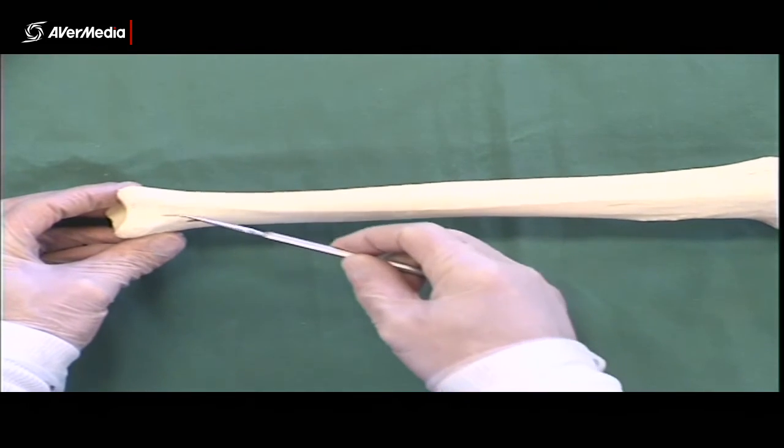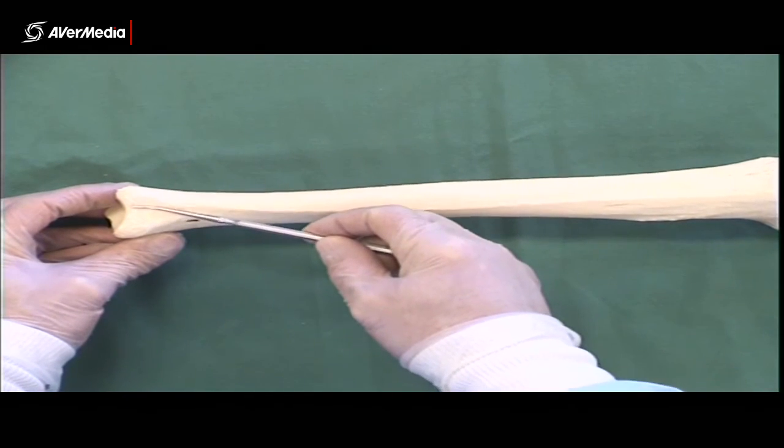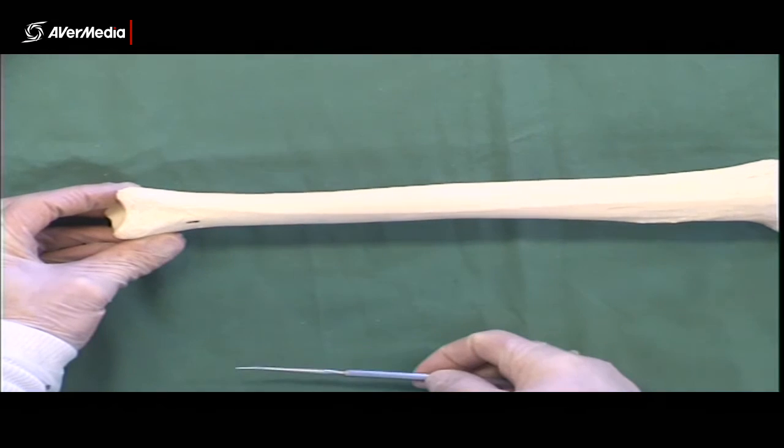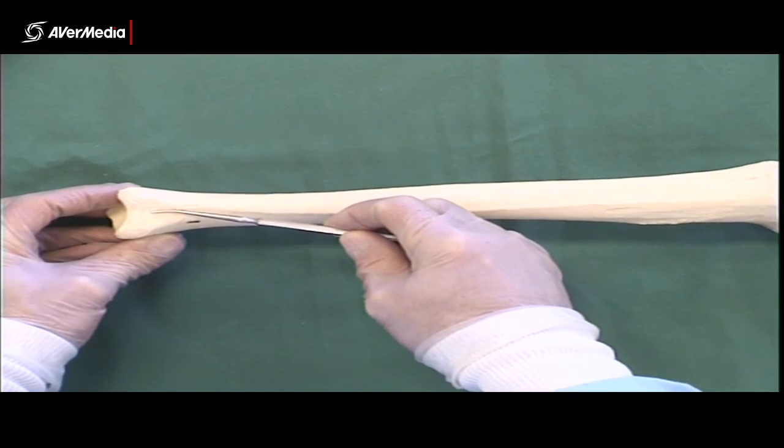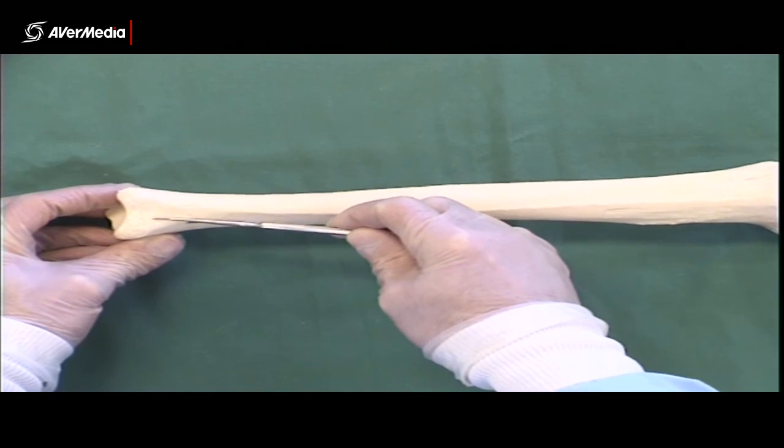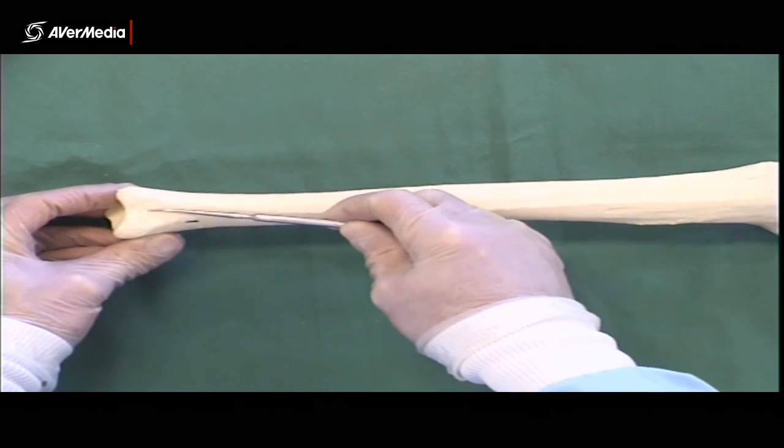And while we're here, down at the distal end, we have a notch here for the fibula to articulate with. Remember, there'll be an interosseous membrane between the two bones there, and that's why it's not a smooth articular surface. It's not covered in the cartilage. It just has a ligament that joins the two bones.